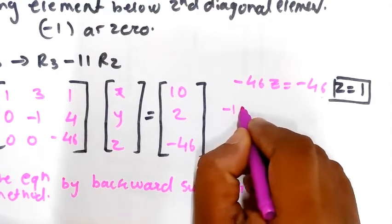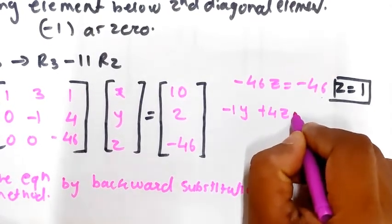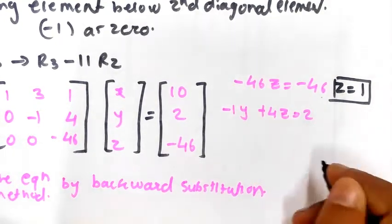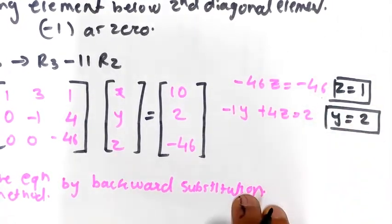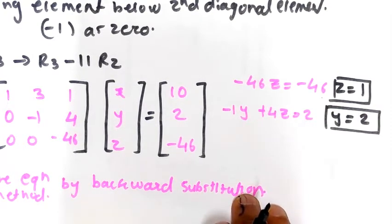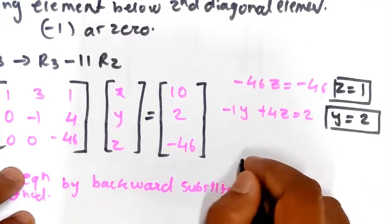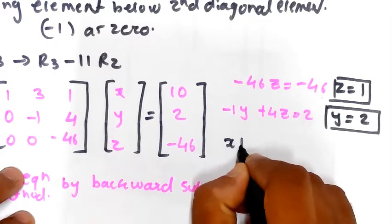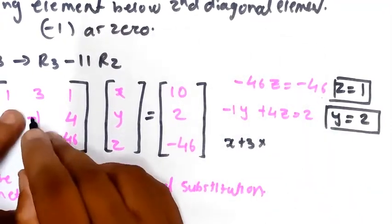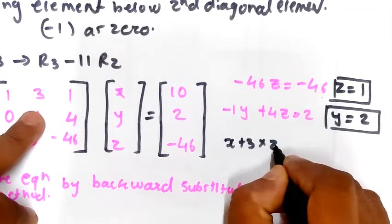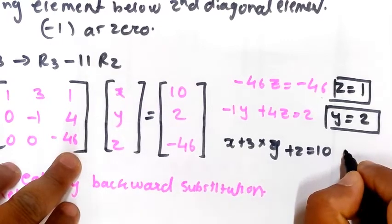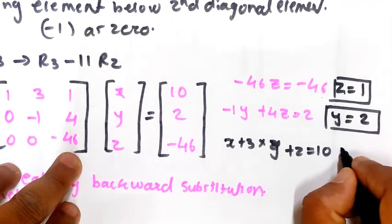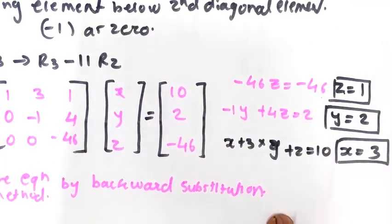From the second equation: -y + 4z = 2. Substituting z = 1 gives y = 2. From the first equation: x + 3y + z = 10. Substituting y = 2 and z = 1 gives x = 3.